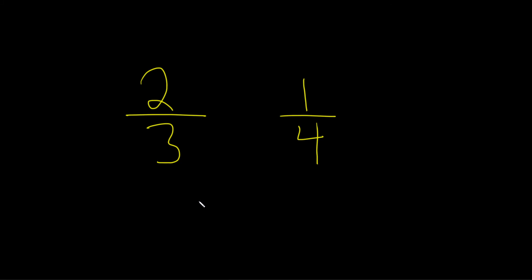So in this case, we can find a common denominator simply by multiplying 3 and 4. So 3 times 4 is 12. That's going to be the denominator that we're going to use.